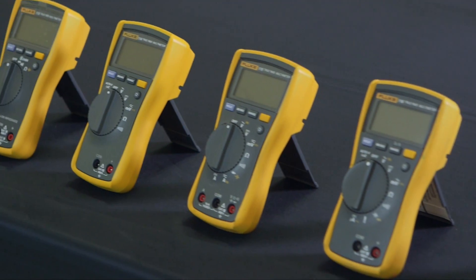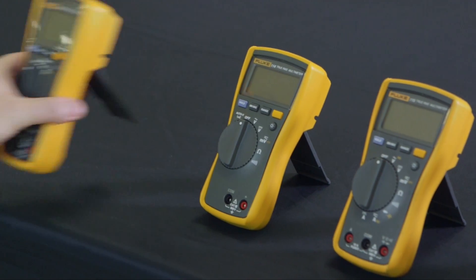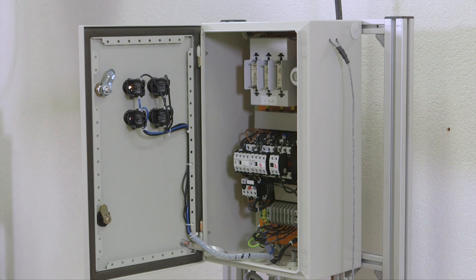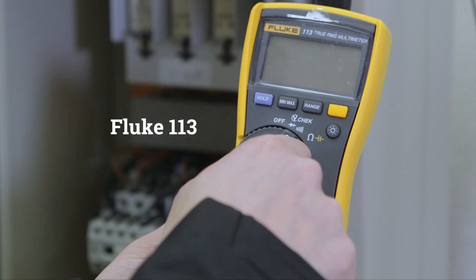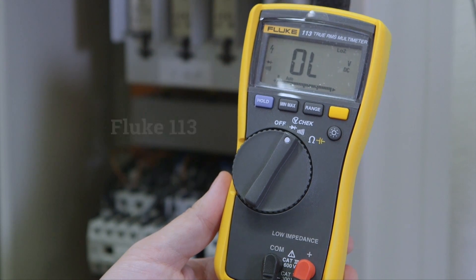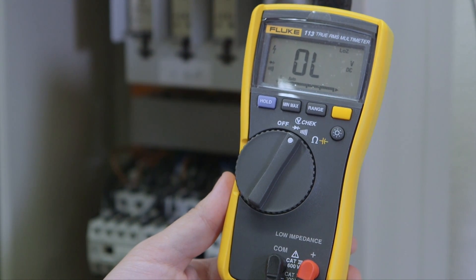For CAT 3 environments, we recommend a digital multimeter in the 110 series. The Fluke 113 offers the possibility to perform basic measurements and connection tests in a fast and easy way. Its V-check function lets you test voltage and continuity at the same time.